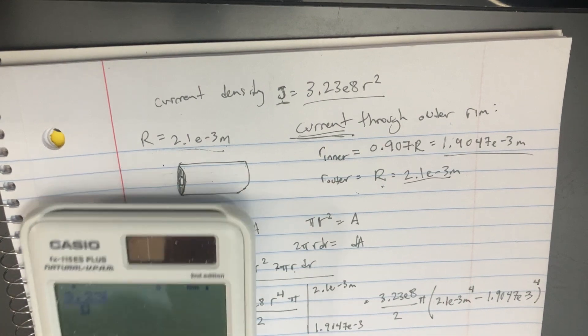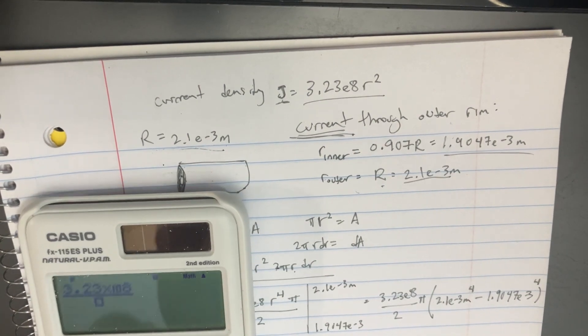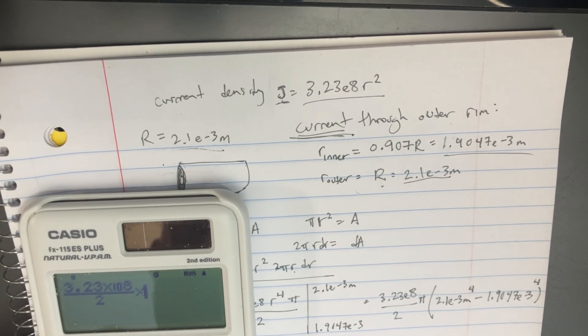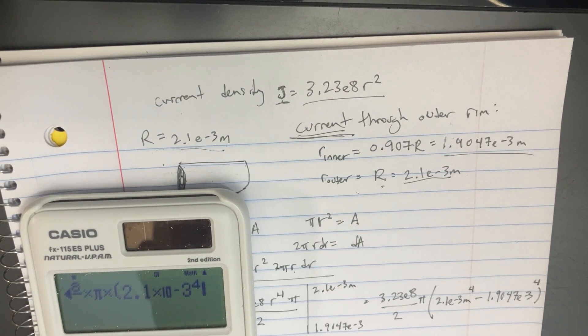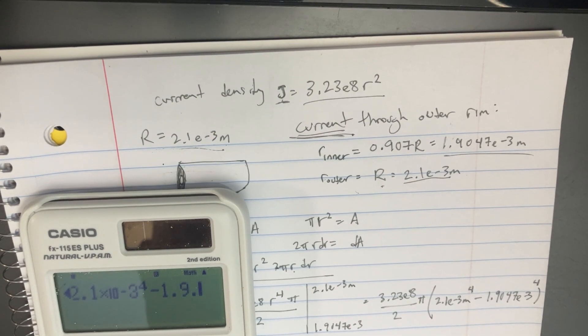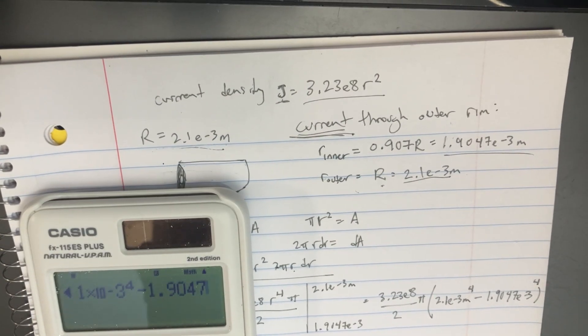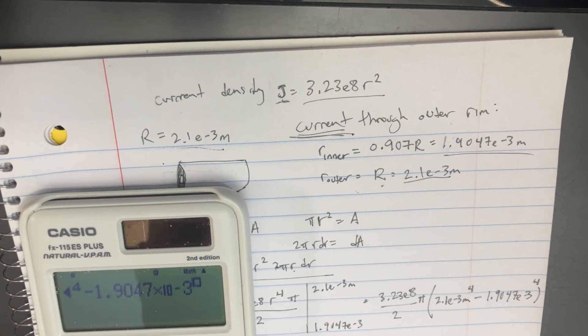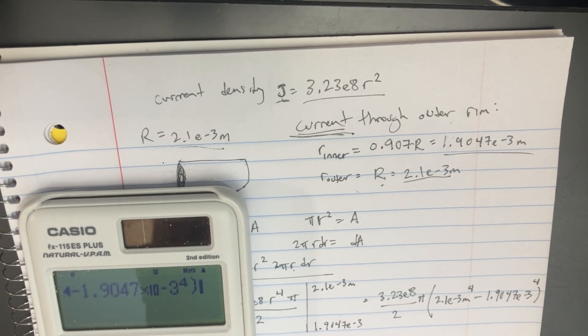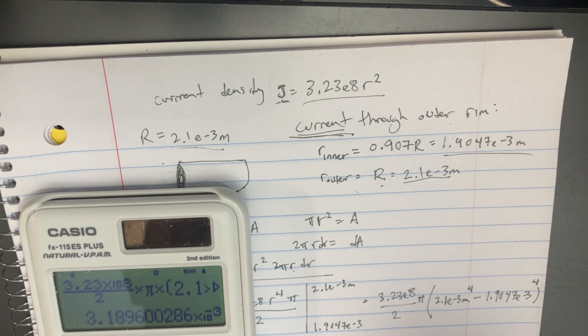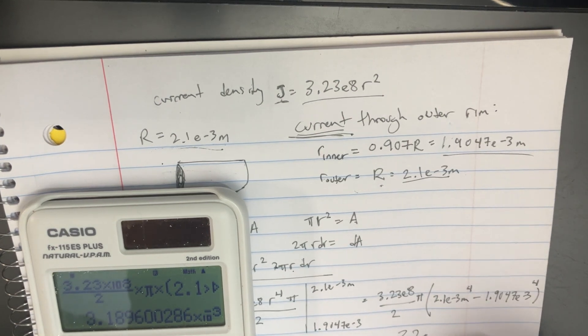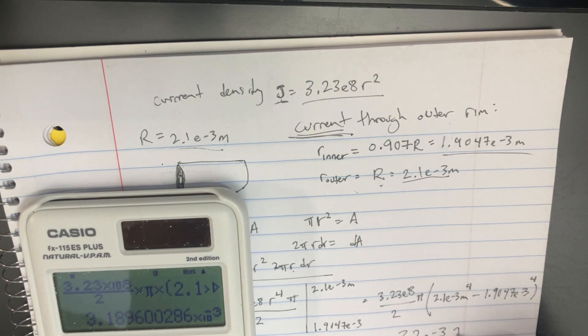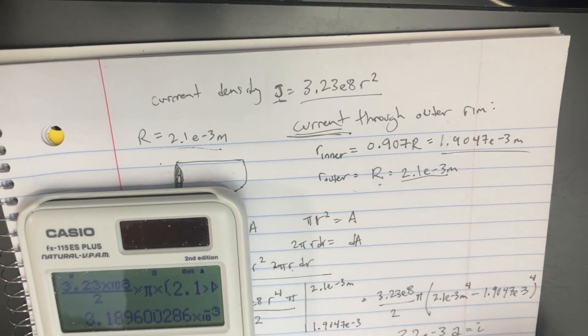3.23e8 divided by 2 times π times (2.1e-3 to the fourth power minus 1.9047e-3 to the fourth power). And the total is going to be 3.2e-3 amps for the current. Simple.